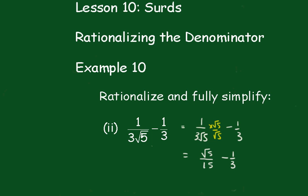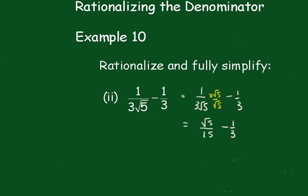Now, I'm tidying that up. This will be equal to root 5 on 15 minus, now, this will be a 5 on 15, which gives the final result of root 5 minus 5 all over 15. Here we go.